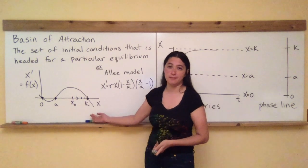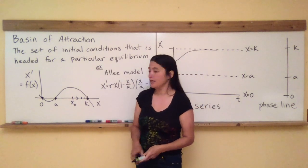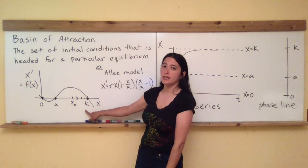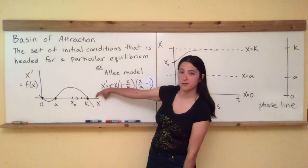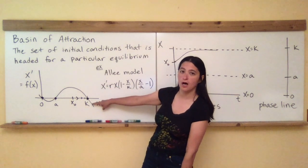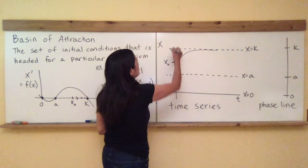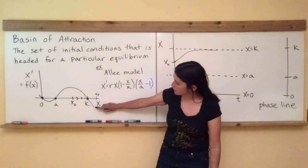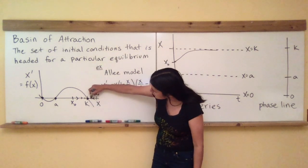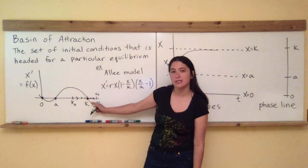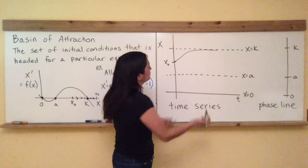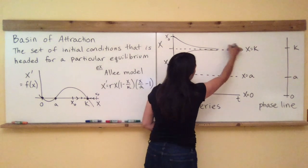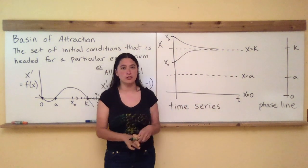That's why we call the carrying capacity a stable equilibrium point — if we start at some value close to but less than k, we go towards it. And if we start at some value greater than k, the rate equation tells us to decline and also go towards k. If I started at another x-naught above k where the rate equation is negative, I'm going to decrease, decrease, decrease until I get to the carrying capacity, approaching the equilibrium point.